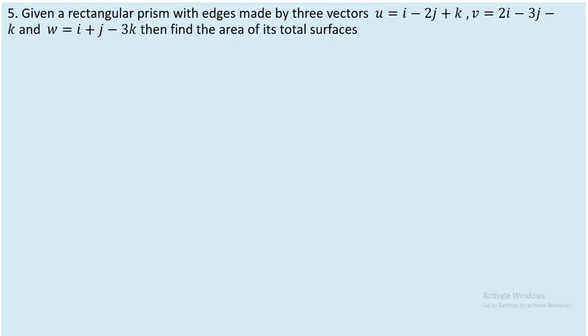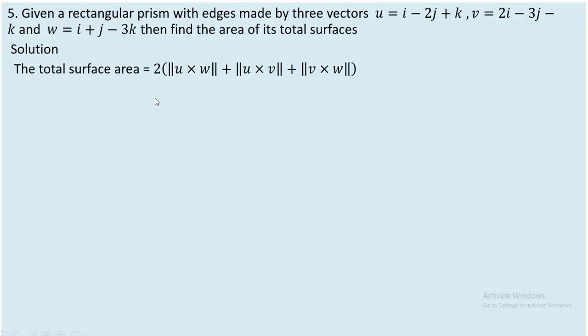So the first thing that we need to do is find the cross product of either U cross V, or U cross W, or V cross W as we wish. The total surface area is going to be twice of the norm of U cross W, plus the norm of U cross V, plus the norm of V cross W. The norm of arbitrary two vectors makes the area of the rectangular region — the area of the face of the prism. So we are now forced to determine these three values.